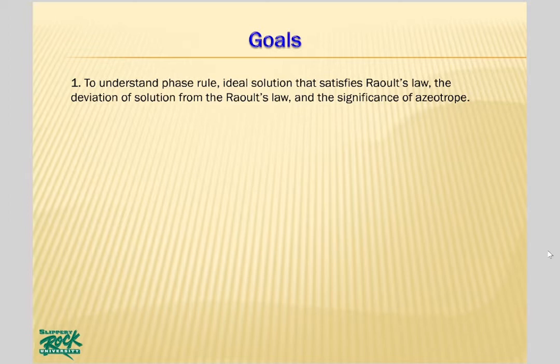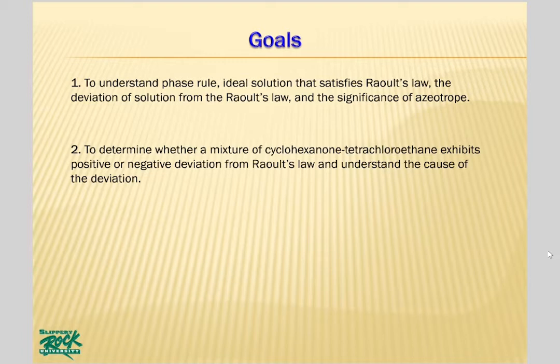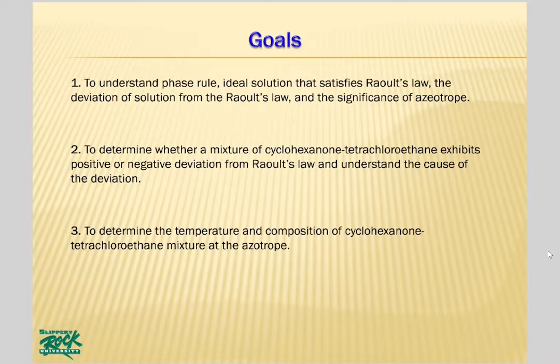In this lab, you will learn the phase rule, the ideal solution that satisfies Raoult's Law, the deviation of solution from Raoult's Law, and the significance of azeotrope. You will determine whether a mixture of cyclohexanone and tetrachloroethane exhibits positive or negative deviation from Raoult's Law and understand the cause of the deviation. You will also determine the temperature and the composition of the cyclohexanone and tetrachloroethane mixture at the azeotrope.